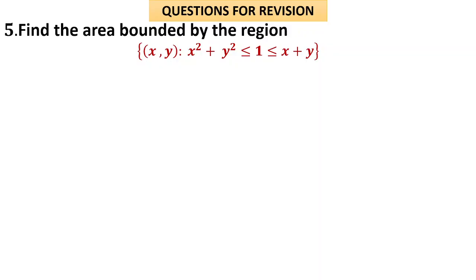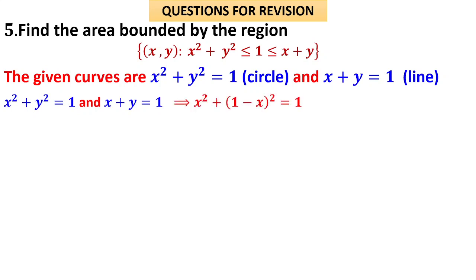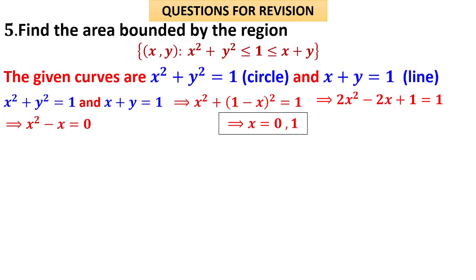Find the area bounded by the region x² + y² ≤ 1 and x + y ≥ 1. Both are given as inequalities — a quadratic and a linear. The given curves are a circle and a line. Substituting the line equation into the circle equation, we get 2x² − 2x = 0, so x² − x = 0, giving x = 0 and x = 1. The circle and the line meet at x = 0 and x = 1.